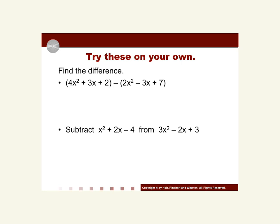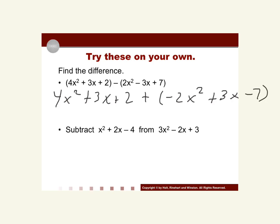Alright, welcome back. We'll go ahead and reveal the answer. So I have 4x² + 3x + 2, change the minus to a plus, and inside everything goes to its opposite: -2x² + 3x - 7. Combining like terms: x squareds give 2x². Then 3x + 3x = 6x. And 2 + (-7) = -5. Final answer: 2x² + 6x - 5.